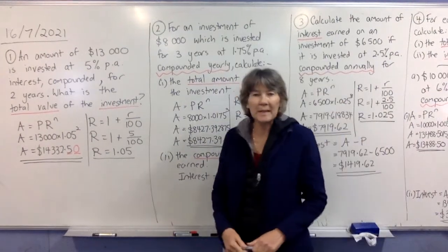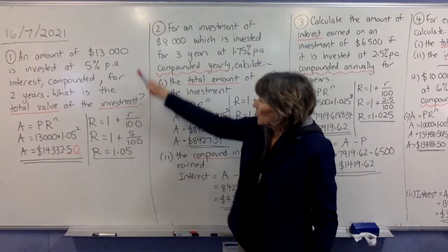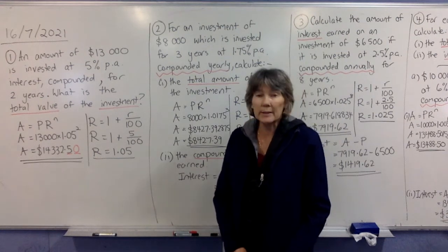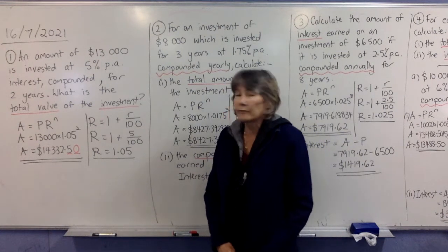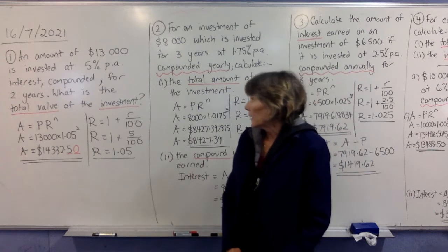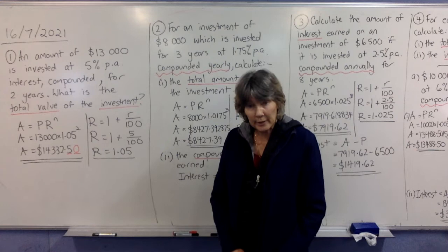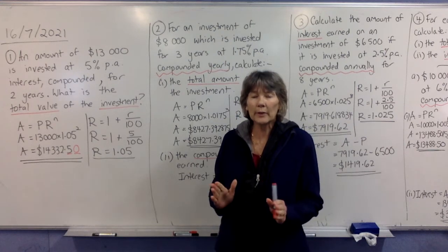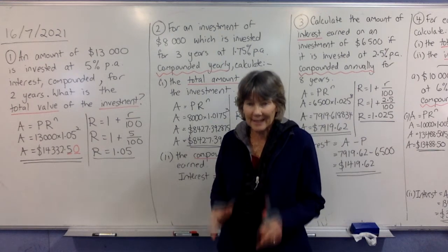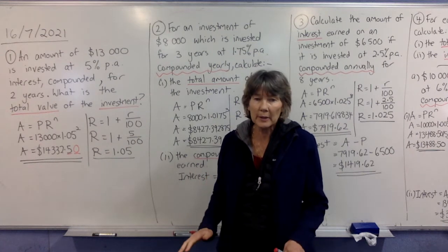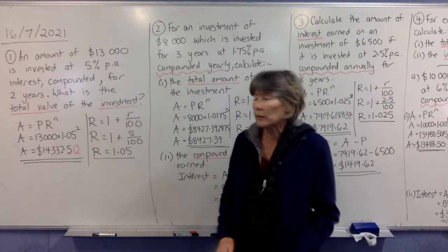Okay, so boys, we're going through some examples now. If you look at this first question, we have an amount of $13,000 invested at 5% per annum interest, compounded. Whenever they put the word compounded in, it means you have to do the compound interest. If they don't mention compounded, it's a simple interest question.